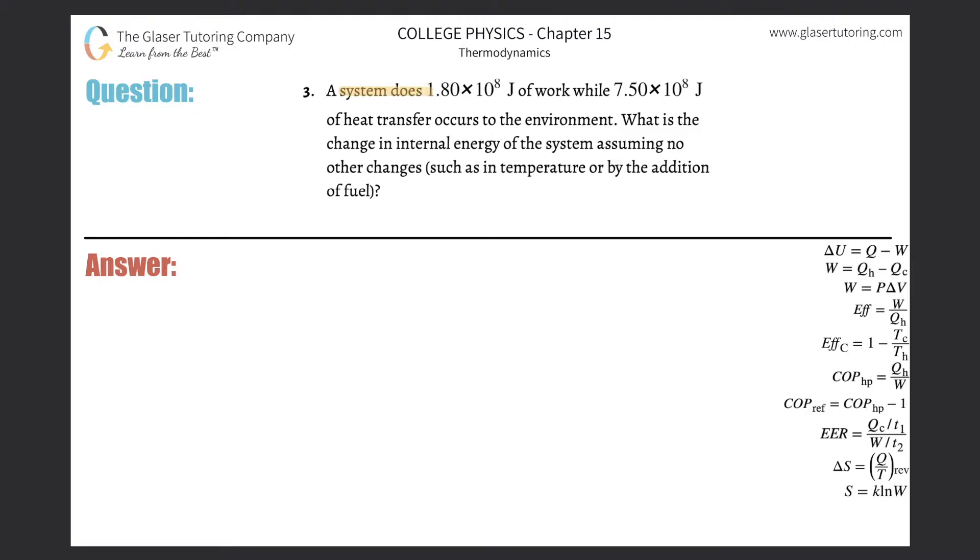Number three. A system does 1.8 times 10 to the 8 joules of work while 7.5 times 10 to the 8 joules of heat transfer occurs to the environment. What is the change in internal energy of the system assuming no other changes?